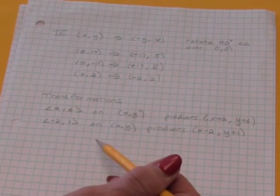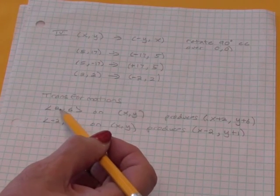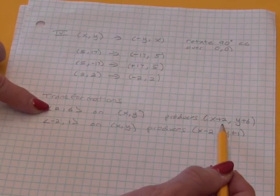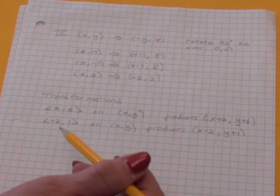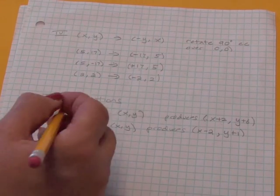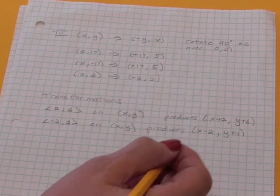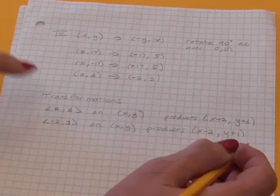Here's just a summary of how transformations work. If you have the transformation 2, 6 on any point x, y, you add 2 to all the x values in your transformation and 6 to all the y values. If instead you have negative 2, 1, then you're going to subtract 2 from all your x values, and you're going to add 1 to all your y values.